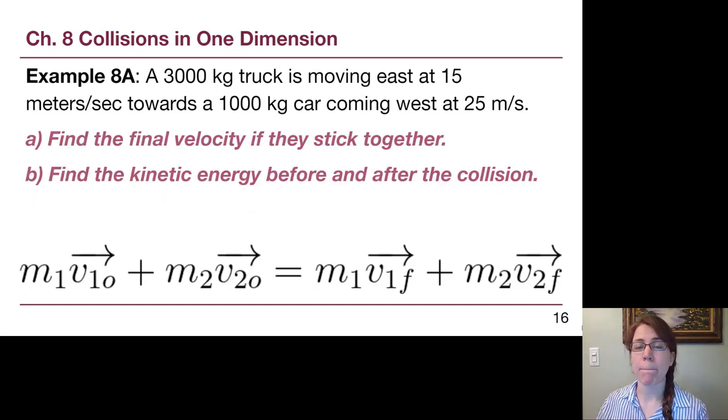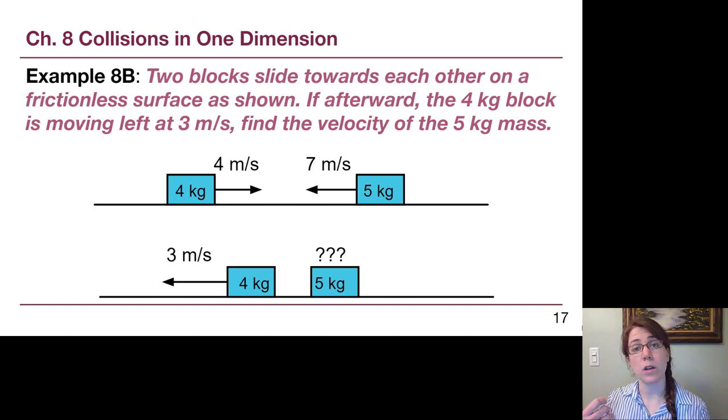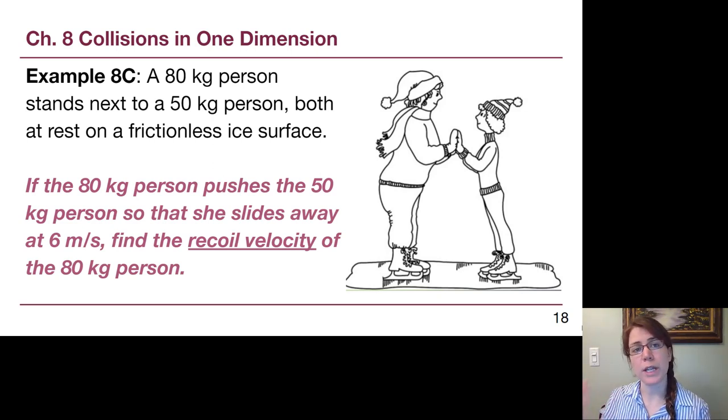The first example that we're going to see uses the conservation of momentum equation to figure out what's going to happen when two objects hit each other and stick together. The second example is when two objects hit each other and don't stick together. If we're given one of those final velocities, we can solve for the other one. And then the third example is two people, two objects that are not currently moving but then push apart from one another. They'll push apart and one will move to the left and one will move to the right.